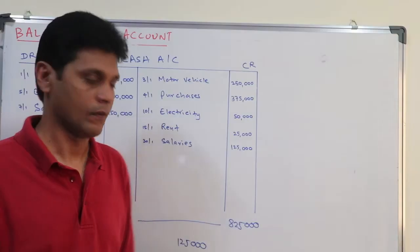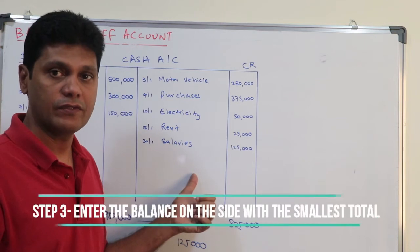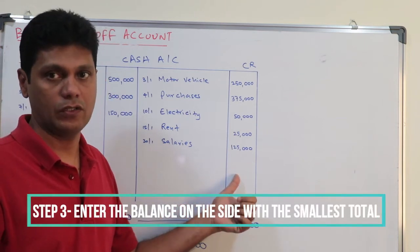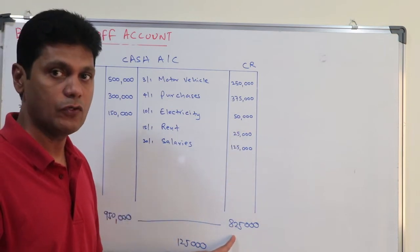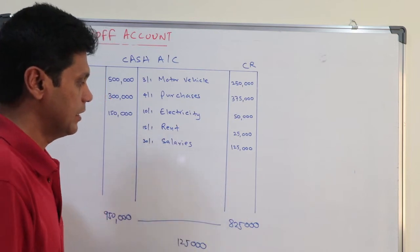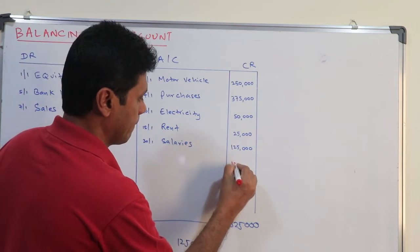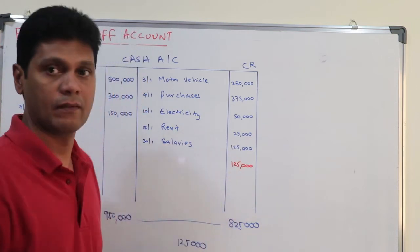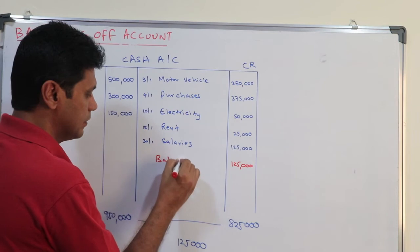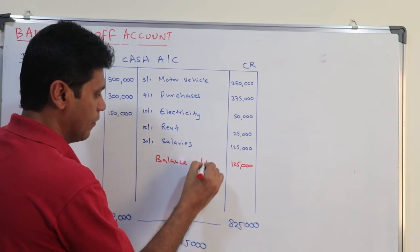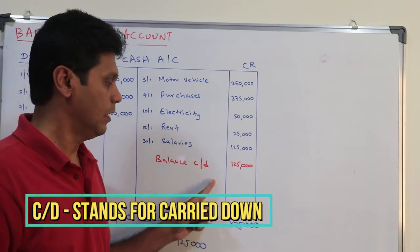Take this balance and write it down on the side of the smallest total. The smallest total is on the credit side, which is eight hundred and twenty five thousand, so you need to write down the balance of one hundred and twenty five thousand here. You should write 'balance carried down' — c/d stands for 'carried down.'